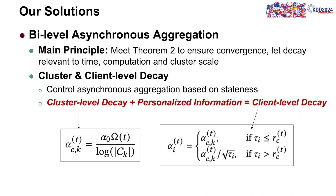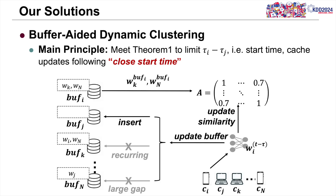To solve the problem, we propose a bi-level asynchronous aggregation to ensure convergence. We integrate personalized information into cluster-level decay to derive a client-level decay, which helps convergence. We also propose a buffer-aided dynamic clustering, applying updates with close start times to calculate similarities and achieve accurate clustering.